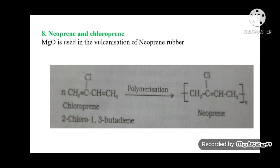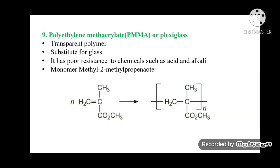Neoprene: the monomer is chloroprene; upon polymerization it gives neoprene rubber. MgO is used in vulcanization of neoprene rubber. PMMA (Polymethyl methacrylate) or Plexiglass is a transparent polymer used as a substitute for glass; it has poor resistance to acids and alkalis. The monomer is methyl 2-methylpropenoate.